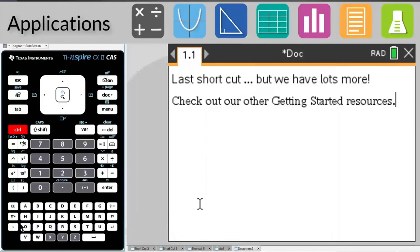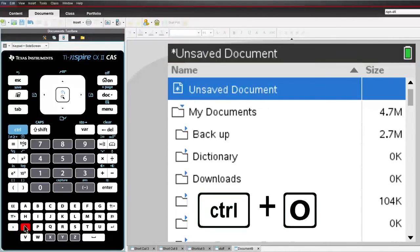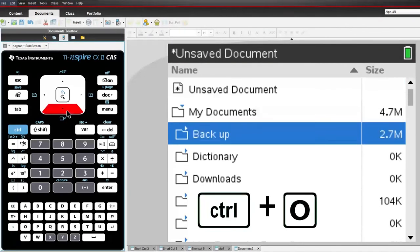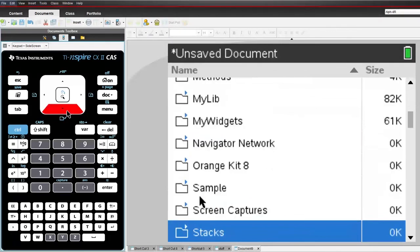If you have a saved document that you want to open, you could browse for it from the home screen, or simply press CTRL and O for open. Select the document from the available folders, just the same as you would on a computer.